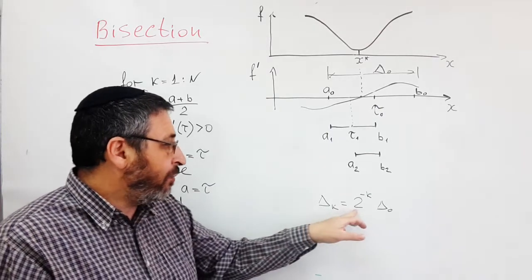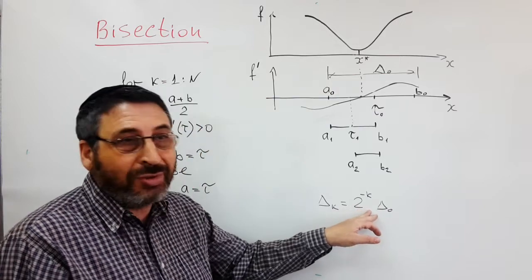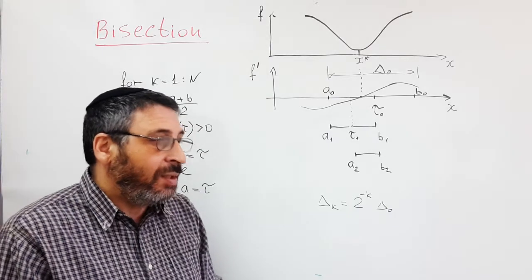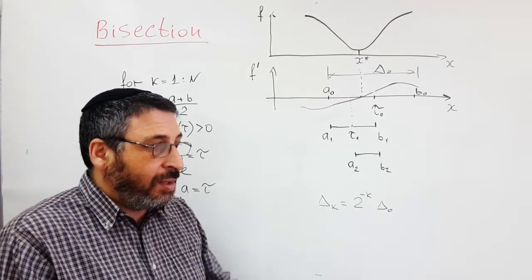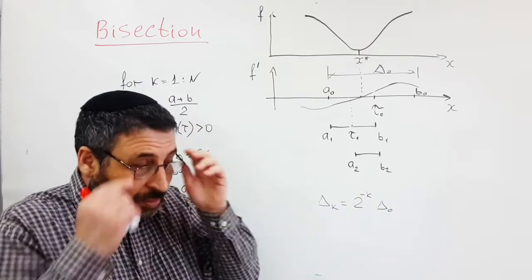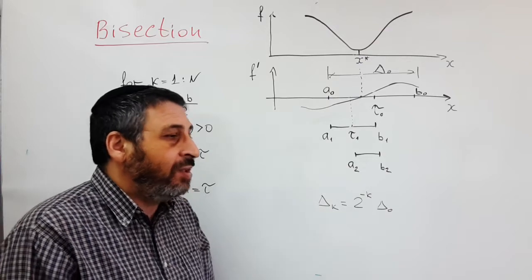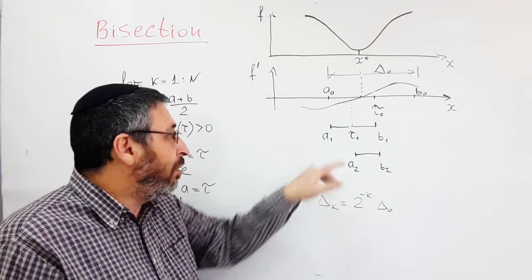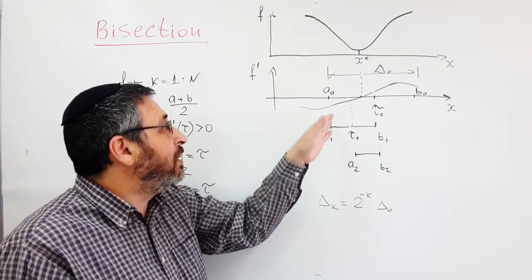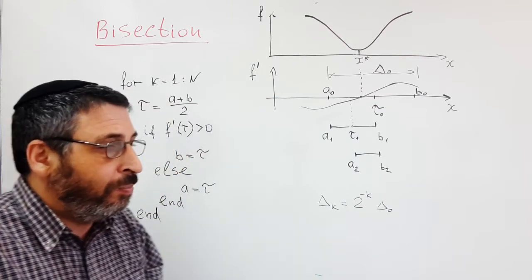For example, after ten iterations we will reduce the error about a thousand times and after twenty iterations about a million times. The method is rather fast, though quadratic-cubic interpolation, which we will learn later, will allow even faster decrease of the uncertainty if our function is well approximated by a quadratic-cubic polynomial.